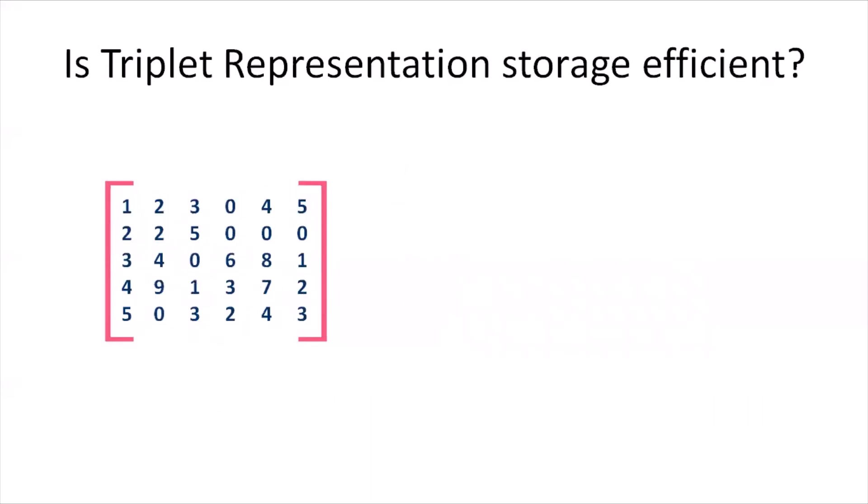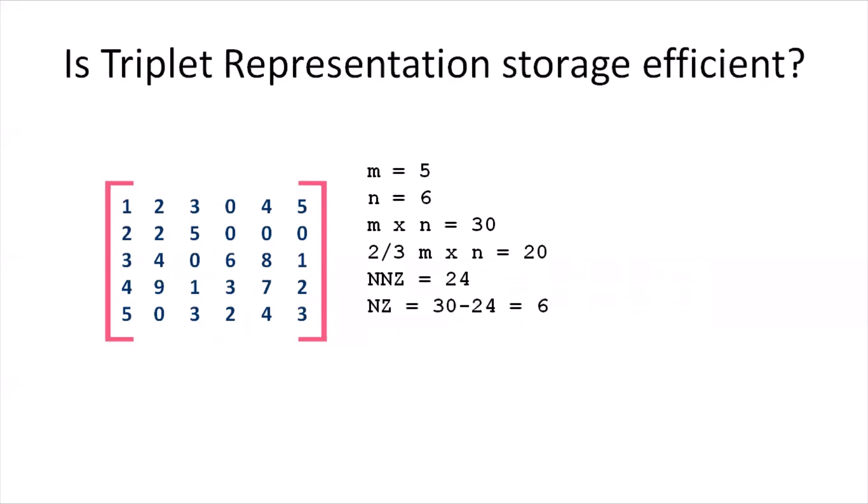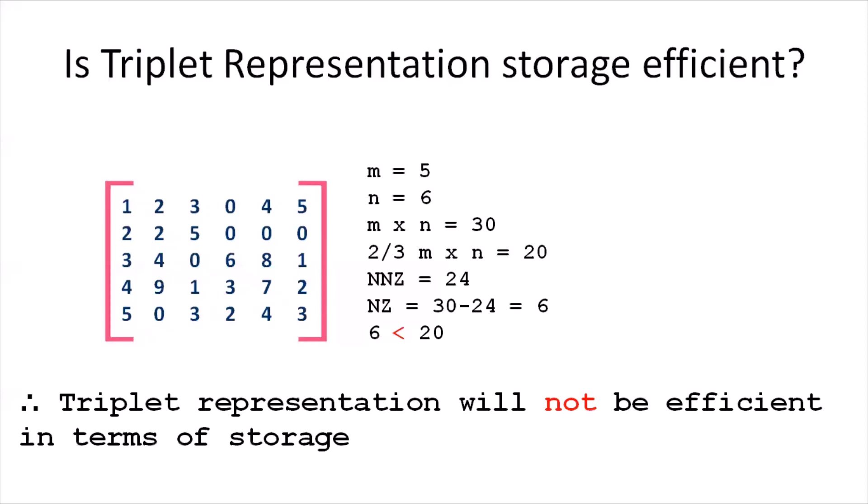But in the case of a dense matrix with the same five-cross-six dimensions — 30 total elements — if the number of non-zero elements is 24, leaving only six zeros, the triplet representation will have 25 rows and three columns, resulting in 75 elements total. Since 75 is much greater than 30, the triplet representation of a dense matrix is never beneficial and will not be efficient in terms of storage.